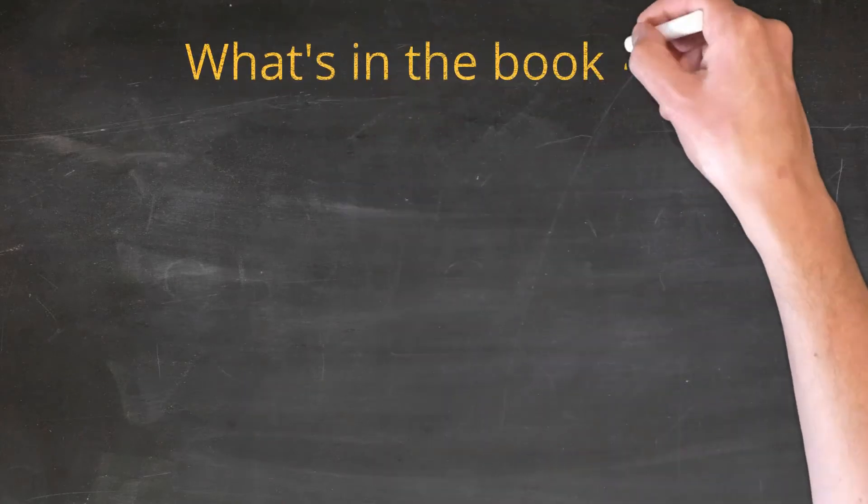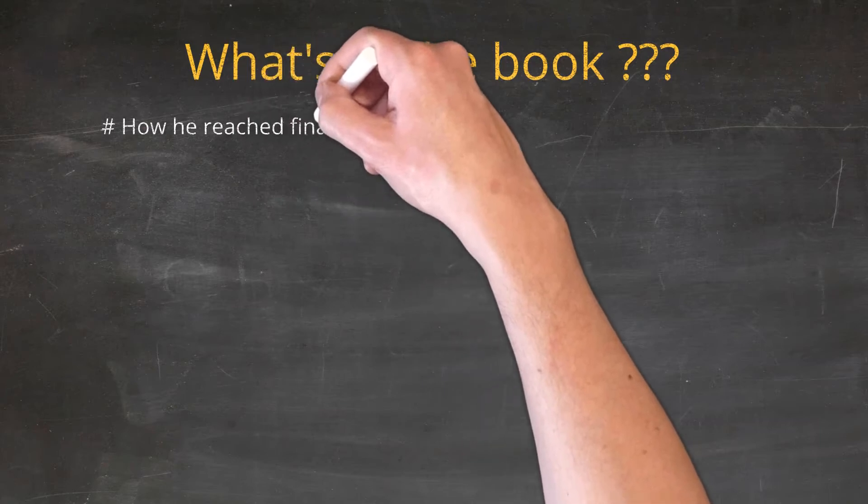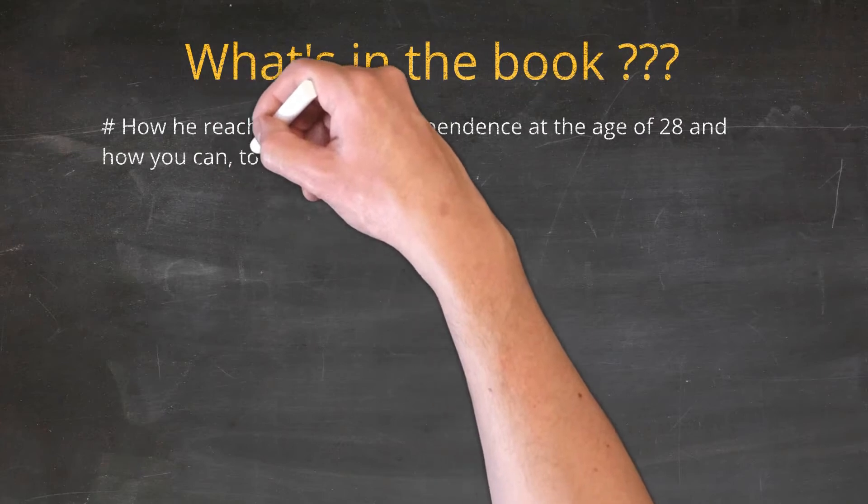What's in the book? In his book, Financial Freedom, A Proven Path to All the Money You Will Ever Need, author Grant Sabatier breaks down exactly how he reached financial independence at the age of 28 and how you can too.